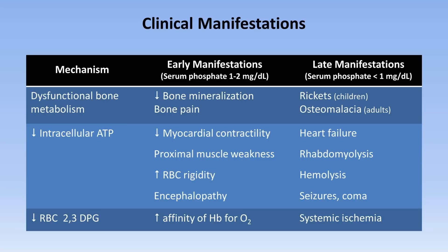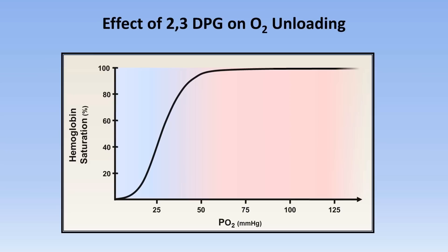This may seem counterintuitive that increased affinity for oxygen would lead to tissue hypoxia, so let's take a quick sidebar to understand it. Here is the oxygen-hemoglobin dissociation curve. As you can see, it's non-linear. In oxygen-rich arterial blood, the partial pressure of oxygen is normal, around 80-100 mmHg, which puts it here on the curve, corresponding to an oxygen saturation of hemoglobin of 99-100%. So normally, in arterial blood, 99-100% of circulating hemoglobin proteins have a molecule of oxygen attached to them.